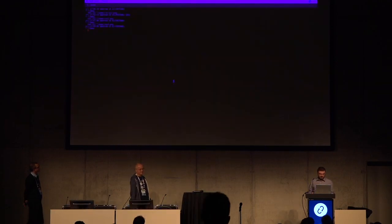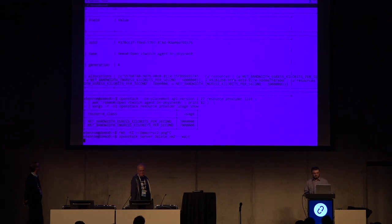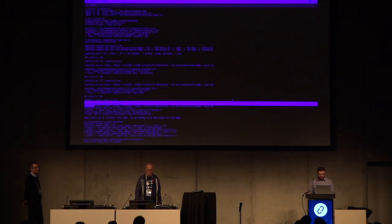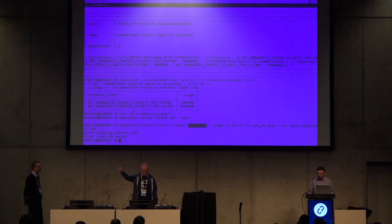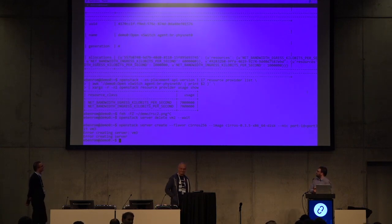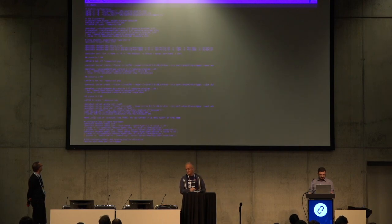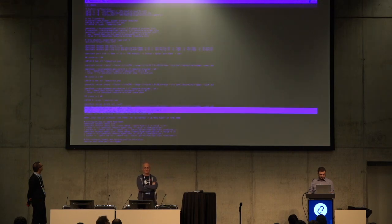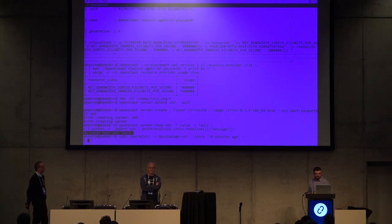We expect the third boot to fail. I'm first deleting VM2 and waiting for it to go away so its resource allocations get freed. Then creating VM3 instead — same flavor, so same CPU and RAM requirements, but now requesting six gigabits of bandwidth. The boot failed. The system couldn't place the VM, as expected. The error message was 'no valid host was found' — this was really a scheduling failure coming back from placement. That concludes the demo.